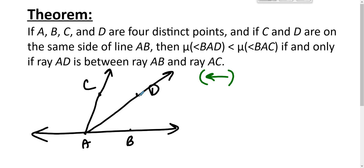Protractor postulate says that the measure of angle CAD plus the measure of angle DAB is equal to the measure of angle CAB. That's the protractor postulate, that's the between this part.